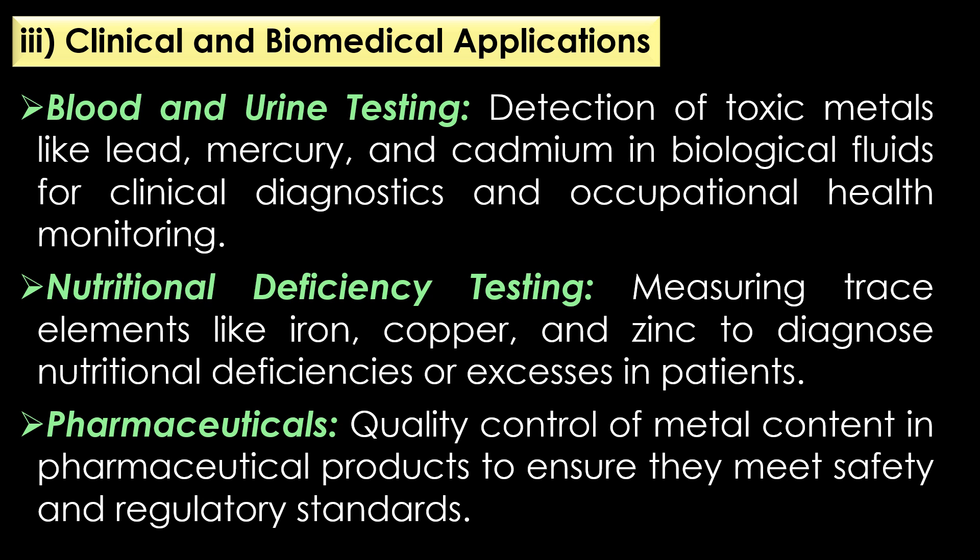Application of atomic absorption spectroscopy in clinical and biomedical applications: AAS is used for blood and urine testing, nutritional deficiency testing, and pharmaceuticals. In blood and urine testing, atomic absorption spectroscopy is used for the detection of toxic metals like lead, mercury, and cadmium in biological fluids for clinical diagnostics and occupational health monitoring.